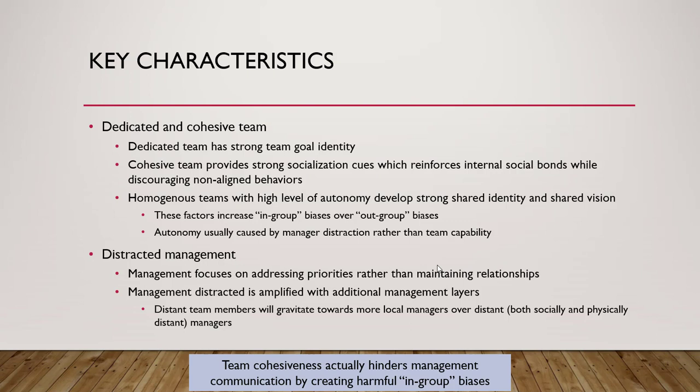Over time, the team becomes homogenous — a single entity with a single shared identity and shared vision. Because the manager neglects the relationship with the team, they develop a high level of autonomy. The manager often likes this because if the team has high autonomy, he doesn't have to get involved. The team takes care of things themselves, so the manager can chase higher priority problems — which, as you'll see, causes more problems than it solves.